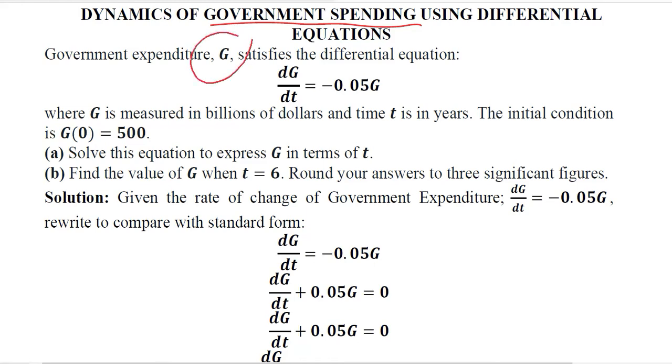We represent it with capital G, and if it is specified with this differential equation, it becomes a source of information for us. The units are billions of dollars for government expenditure and years for time. The initial condition is also given for the government expenditure, which is 500 units.